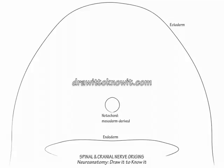The embryo forms around the notochord, and the notochord eventually degenerates into the jelly-like substance of the intervertebral discs, called the nucleus pulposus. If the notochord persists in its primitive state, it is considered a chordoma — a notochord tumor.